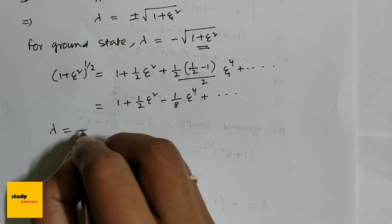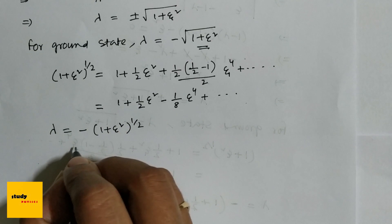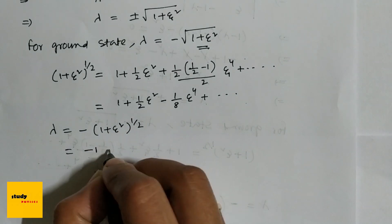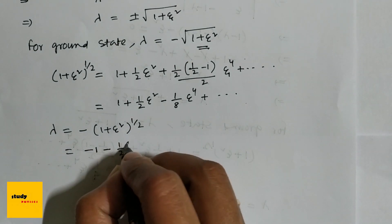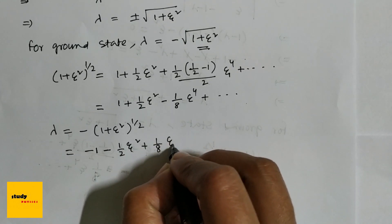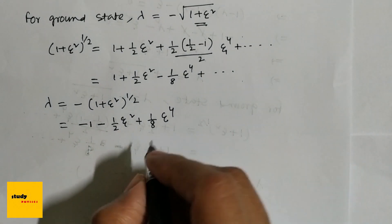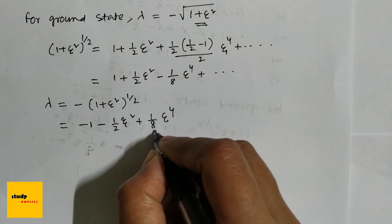The energy eigenvalue here is λ = -(1+ξ²)^(1/2) = -1 - (1/2)ξ² + (1/8)ξ⁴. They want the coefficient of the fourth term, so the answer is 0.125.